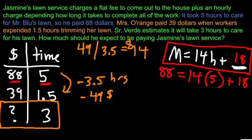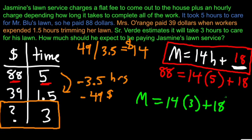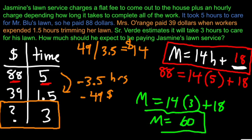All right. Now we're ready to answer that question. Senor Verde estimates it's going to take 3 hours. So now that I have a formula, we want to know how much money will it cost for 3 hours for this lawn service. 14 times 3 is 42, plus 18 is 60. Senor Verde can expect to be paying 60 bucks.